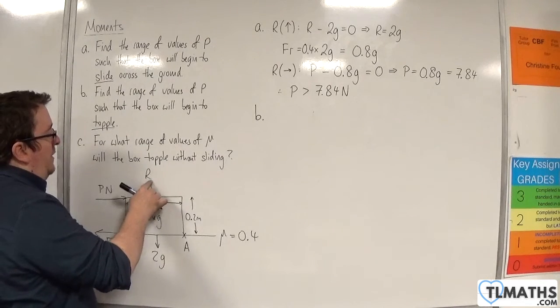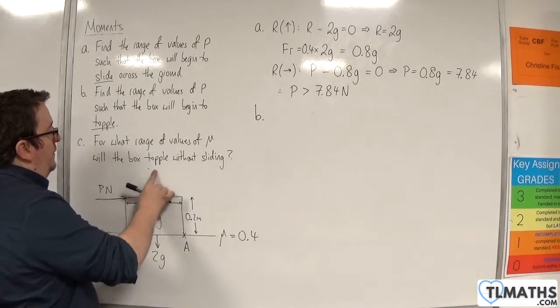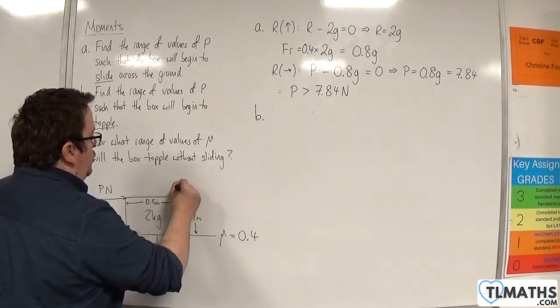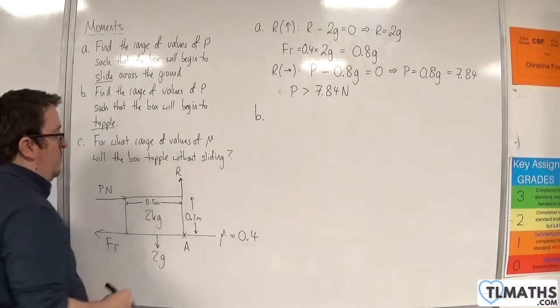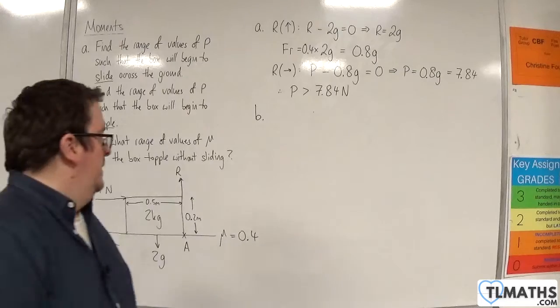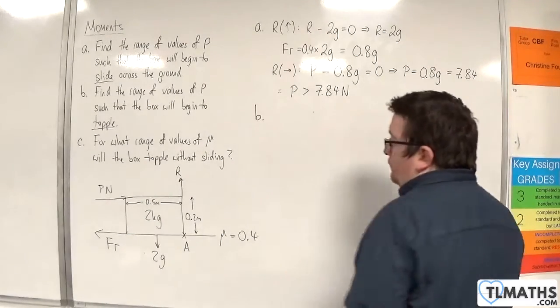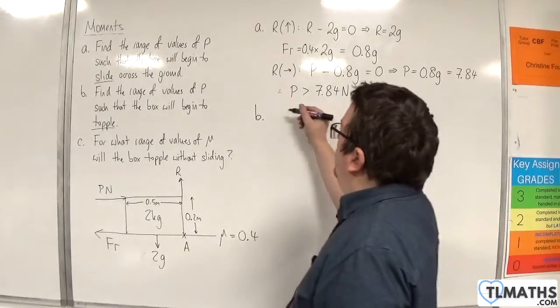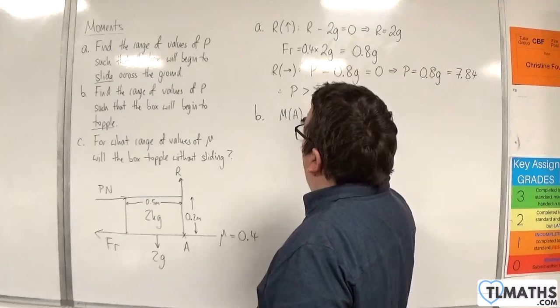If that's the case, that will be the only point that is in contact with the surface. So the normal reaction force will now go through A, like that, go through that corner.